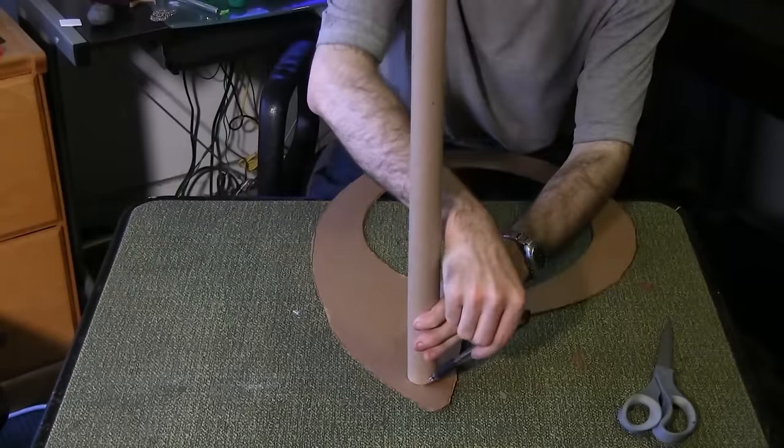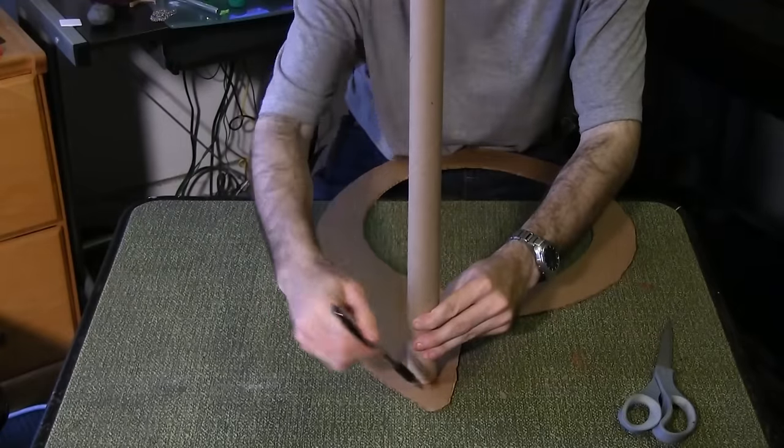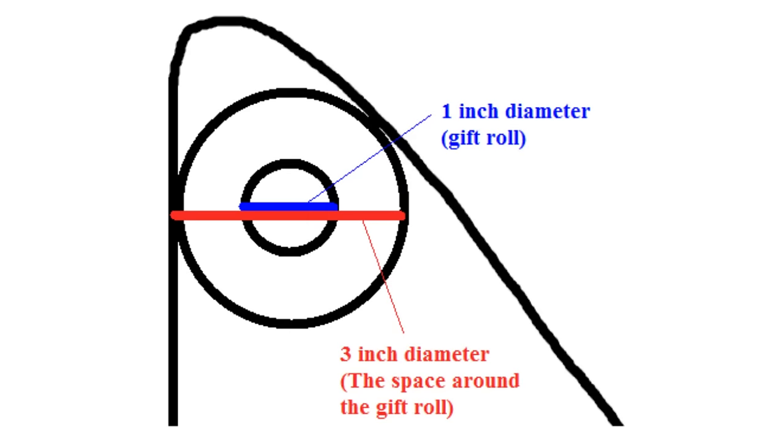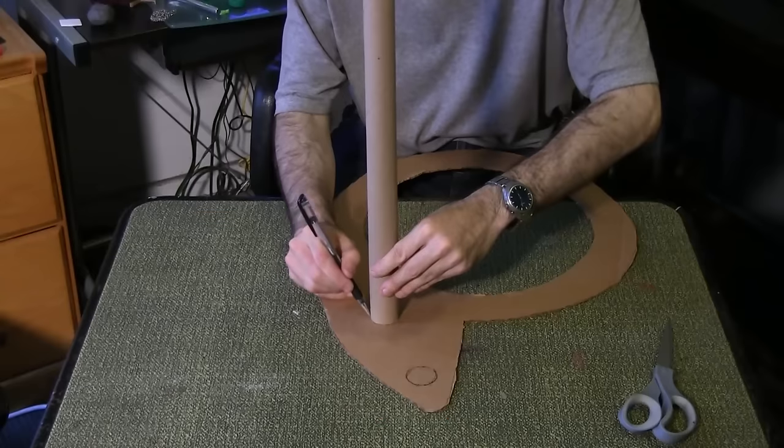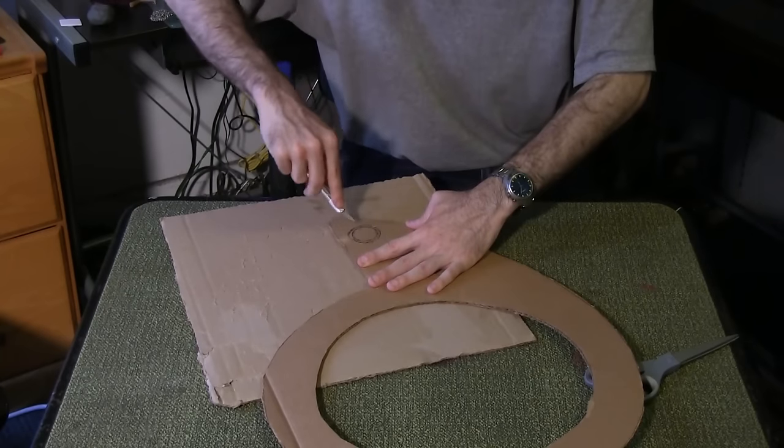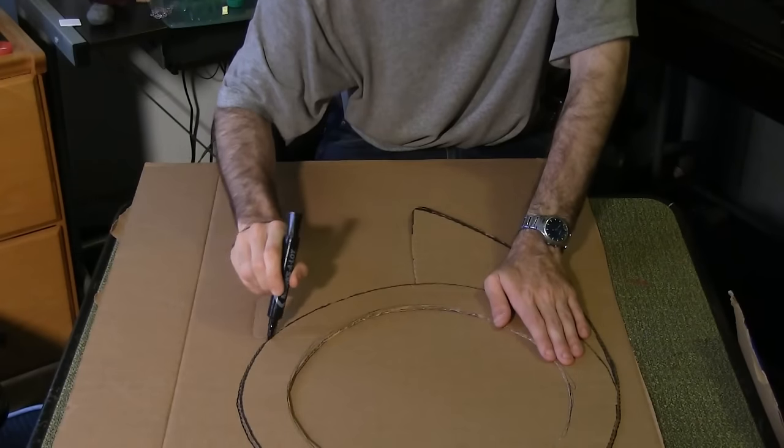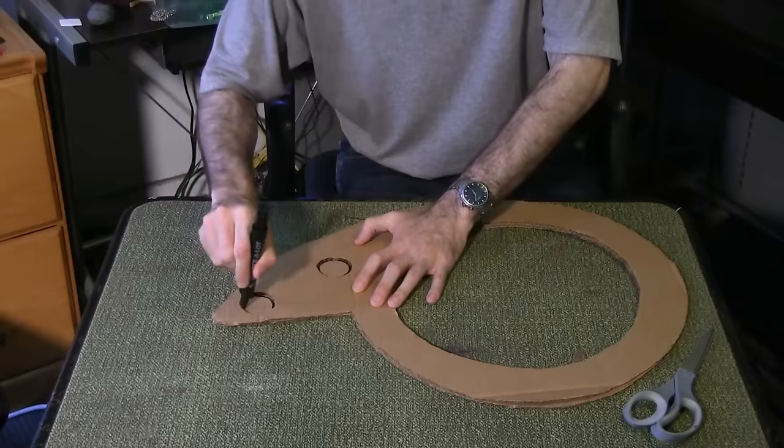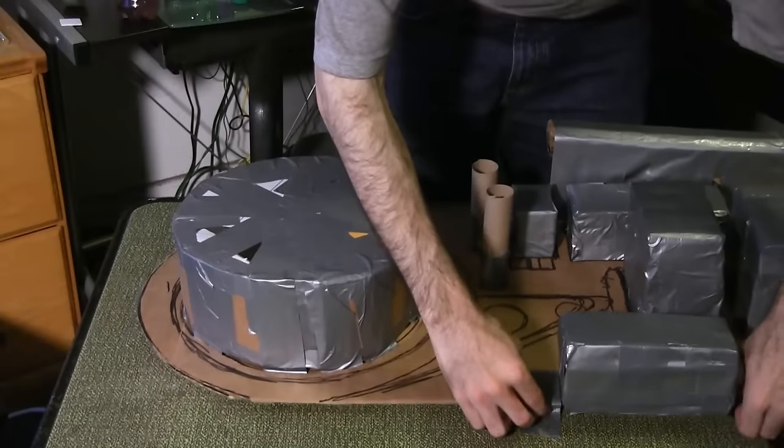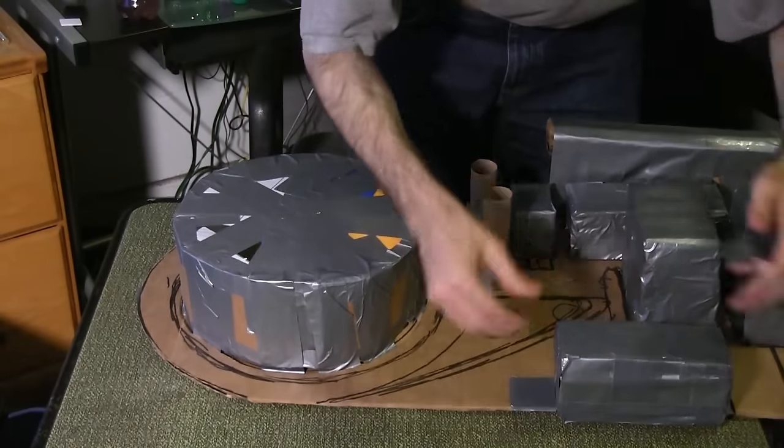Use a gift wrap roll to trace two circles on the triangle. The first should be near the top with the three inch diameter. Use an exacto blade to cut them out. Trace the shape 20 more times on cardboard and cut out the pieces. Duct tape the perimeter of the entire proton pack for extra stability.